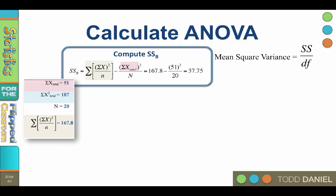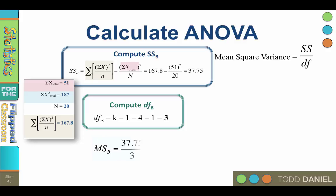Well, we now need the degrees of freedom between so that we can divide. We've already figured out the degrees of freedom between. It's k-1, where k is the number of categories. So, four regions minus one is three. Therefore, the mean square or the variance between is 12.58.